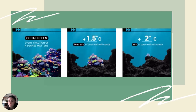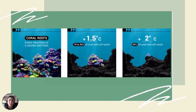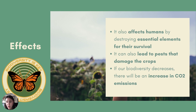Another example is what happened with coral reefs: almost half of the coral reefs have been lost in recent years. With an increase of 1.5 degrees, 70 to 90% of coral reefs will vanish, and with an increase of 2 degrees, 99% of coral reefs will vanish. Not only does the environment suffer from biodiversity loss, but it also affects humans by destroying essential elements for our survival, such as soil and water quality.